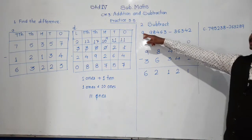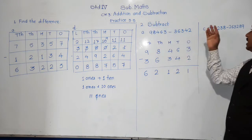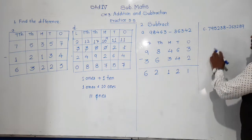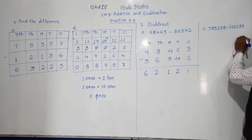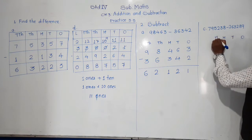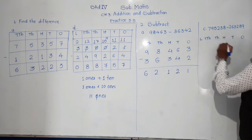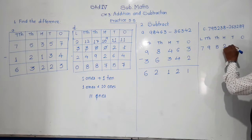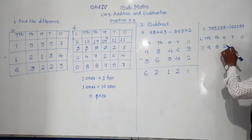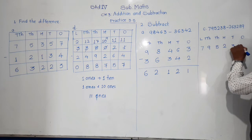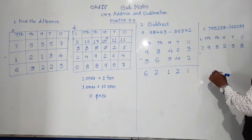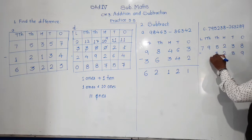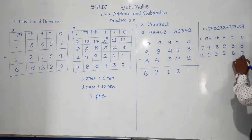Next example — example C. This is a six-digit number, so write six places: ones, tens, hundred, thousand, ten-thousand, and lakh. The numbers are 7,95,238 minus 2,63,289. At ones place: 8 minus 9 — not possible, because 8 is smaller than 9. We take borrow from tens place. One ten is borrowed, 8 becomes 18, and the tens digit 3 becomes 2.